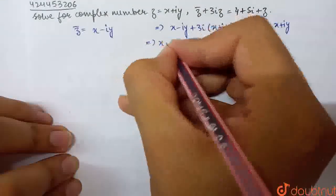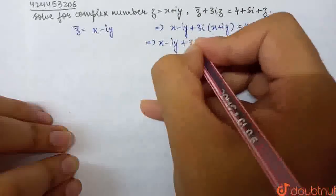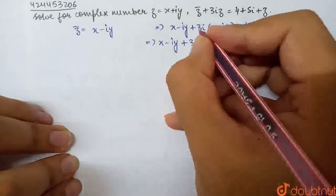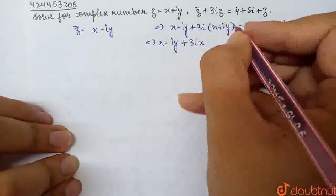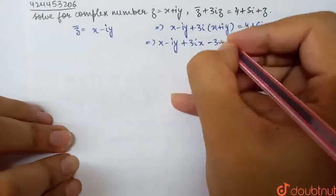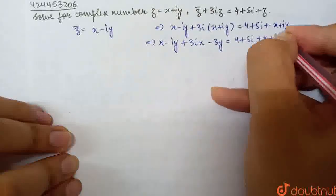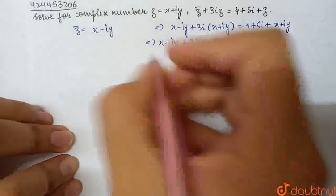So what is Z conjugate? X minus iota Y plus 3 iota X, and iota square, 3 iota into iota Y, that is 3 iota square Y. Iota square is minus 1, that is minus 3Y, equal to 4 plus 5 iota plus X plus iota Y.